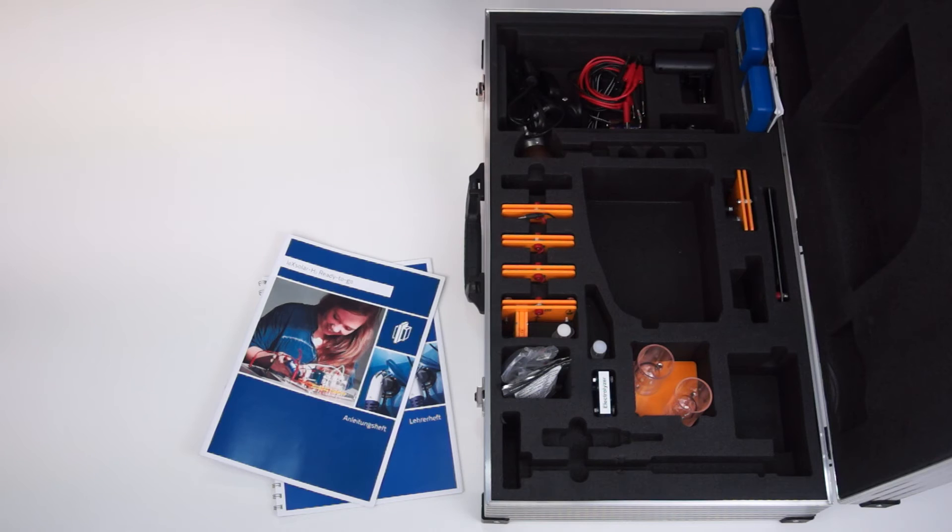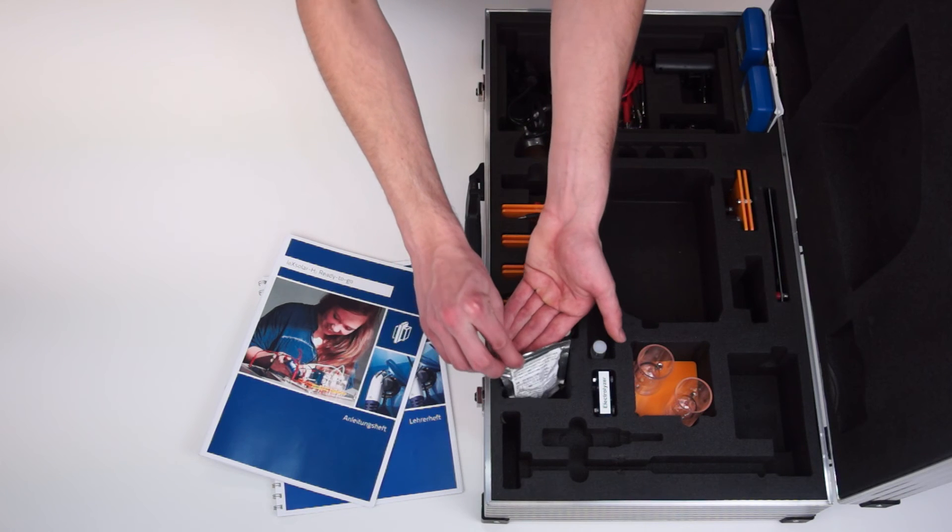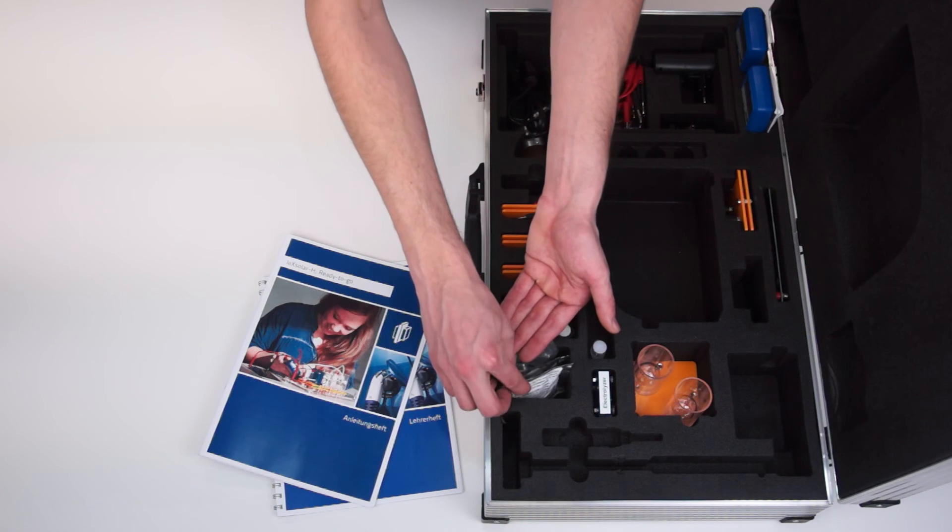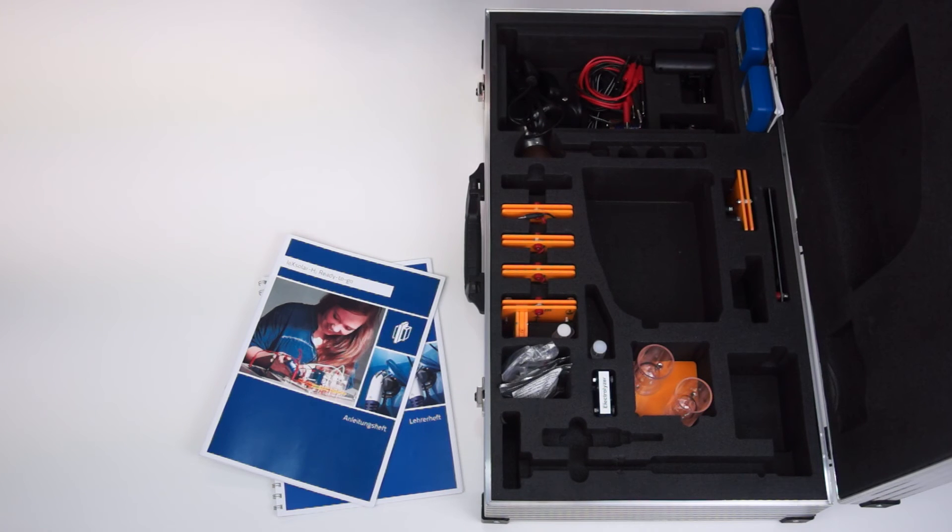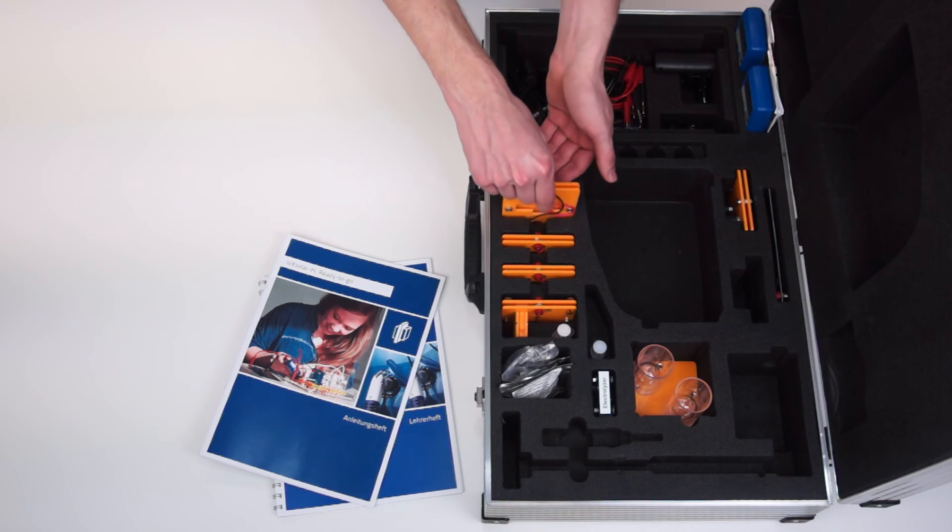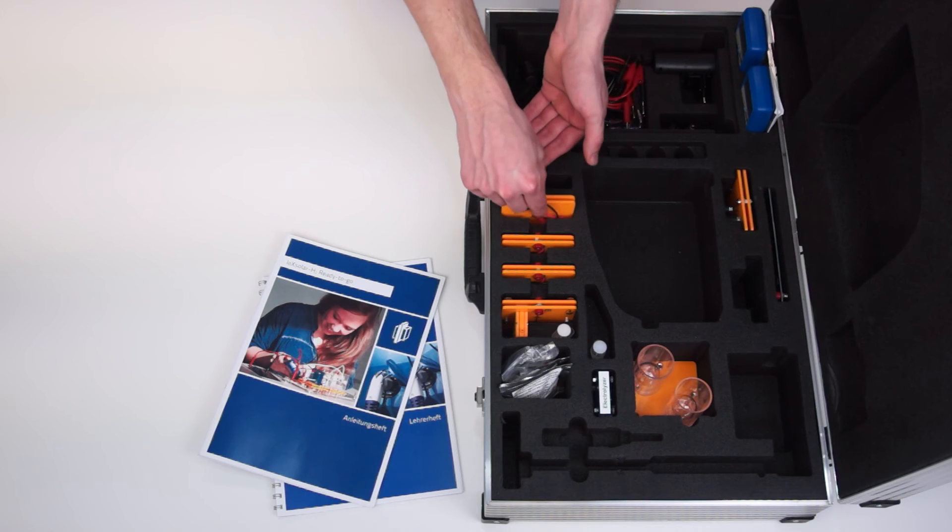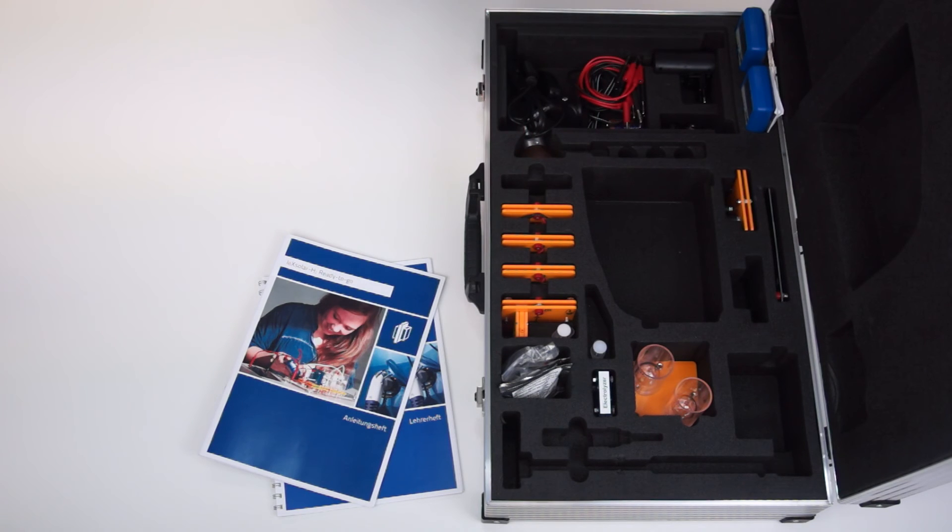So for example another two PEM fuel cells can be used. They are also supplied in a protective foil to prevent dehydration. Using the module plates the behaviour of the voltage and current in series and parallel circuits can also be carried out.